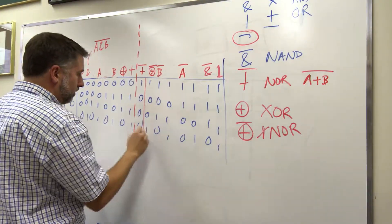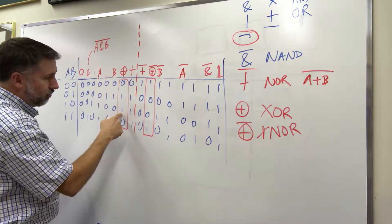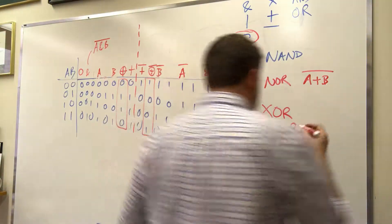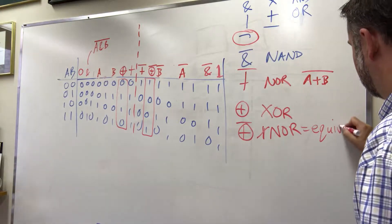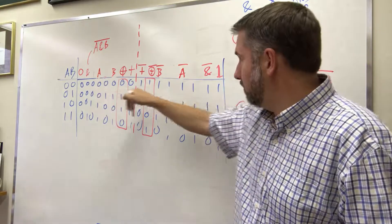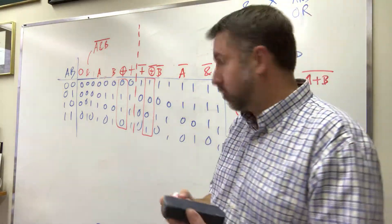One or the other but not both. Both true or both false. Actually XNOR is another way of saying that is equivalence. So if both of the inputs are 0 or both of the inputs are 1, XNOR is true. So there's two more functions.